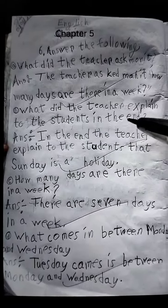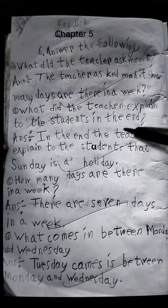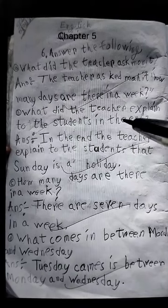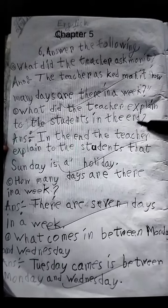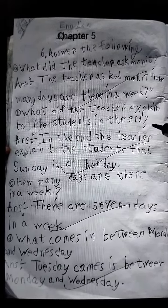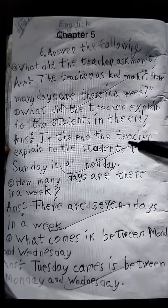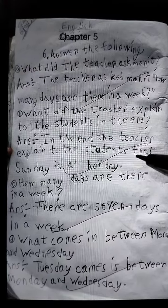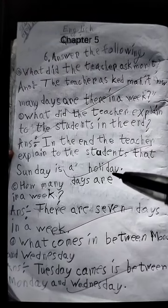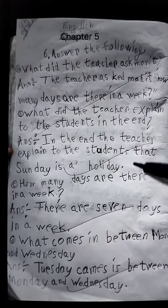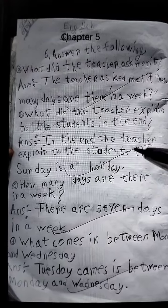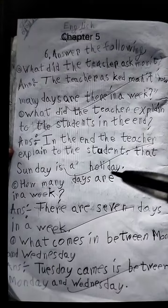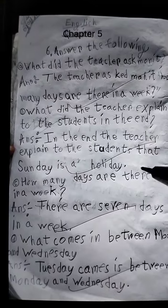Number B: What did the teacher explain to the students in the end? Answer: In the end, the teacher explained to the students that Sunday is a holiday.